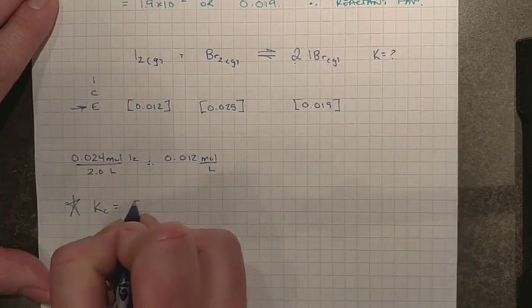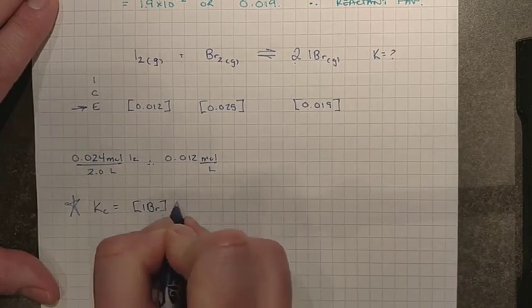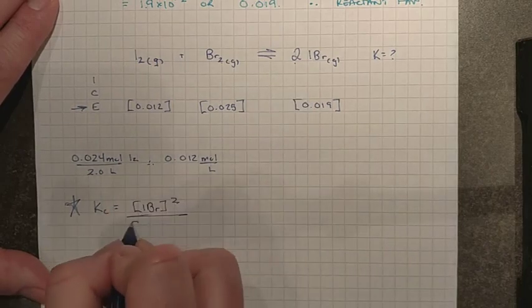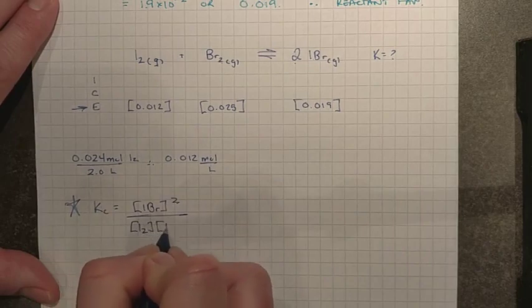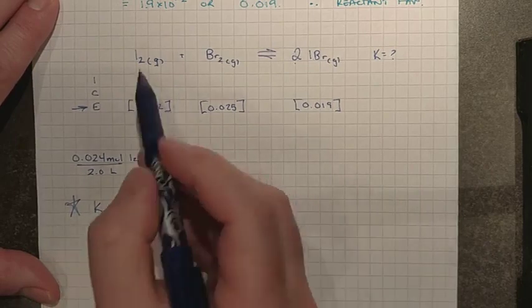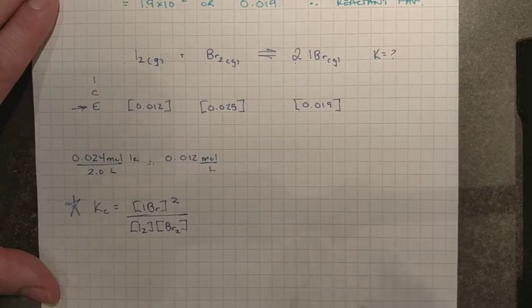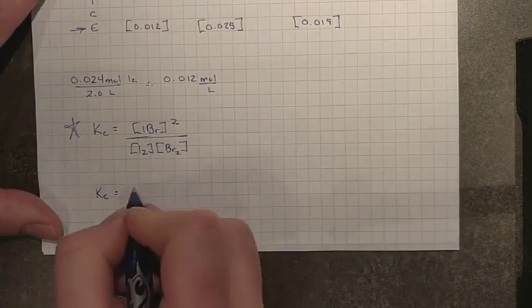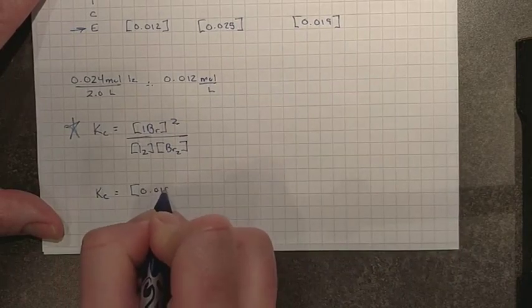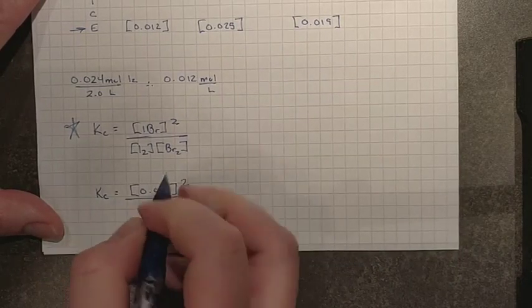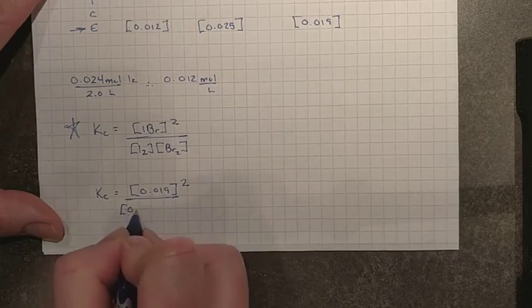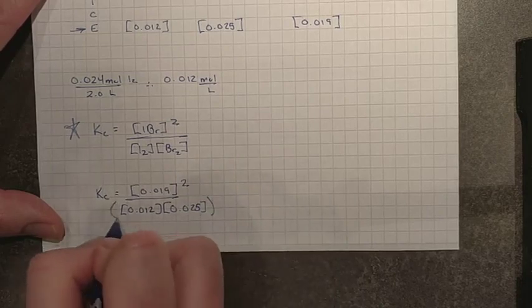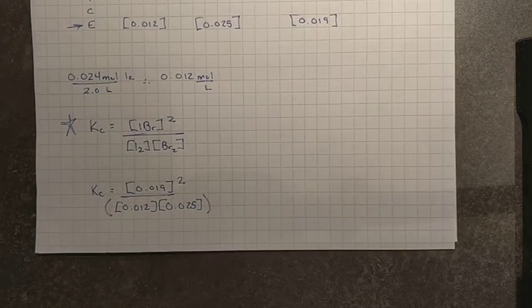So, we need our IBr as our product. But that's raised to the power of 2 because of the molar coefficient. Now, we can put in our reactants, which are I2 concentrations and Br2 concentrations, both raised to the power of 1 in our balanced equation. Now, we can go through and plunk in our numbers. IBr2, 0.019 raised to the power of 2, all over 0.012 times 0.025. And again, that entire denominator has to be resolved before you finish the division statement.